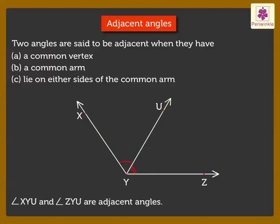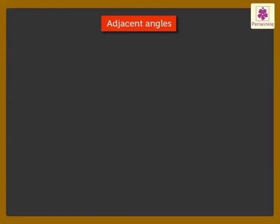They lie on either sides of the common arm ray YU. Kids, remember: Angle XYZ and Angle XYU are not adjacent angles as they do not lie on either sides of the common arm XY. Now, let's solve an example.